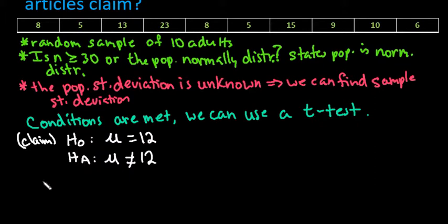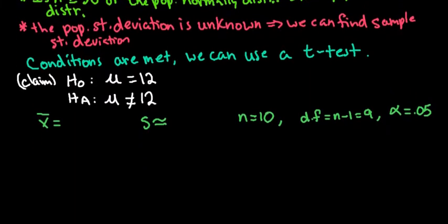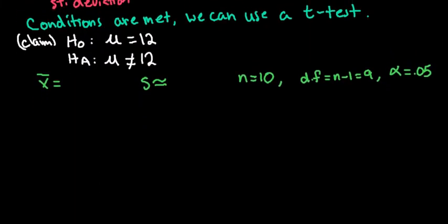Some things we have to have in order to use the formula: we need to know x bar and I will show you how to do this in just a minute. We also need to know what s is, our sample size which is 10, and it's important to reference the degrees of freedom. Since we are dealing with a t-test, the degrees of freedom are n minus 1, so our degrees of freedom would be 9. Our alpha level is 0.05.